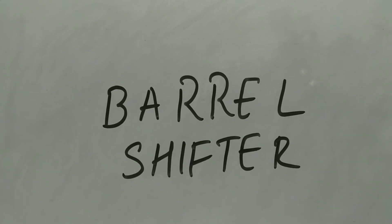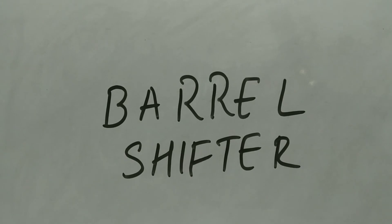What's a barrel shifter? A barrel shifter is a digital circuit that can shift or rotate a data word by a specific number of bits without use of sequential logic gates — that means a barrel shifter is a combinational circuit. It is used to shift or rotate a specific number of bits in modern microprocessors.